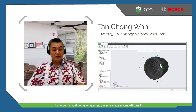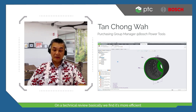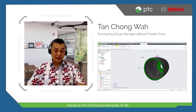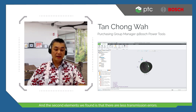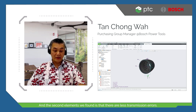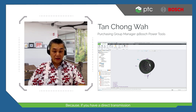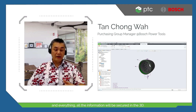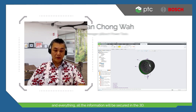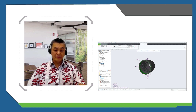On technical review, we found it is more efficient based on the functional elements of 3D. We also found there are fewer transmission errors because all the information is directly captured in the 3D model. As soon as the finished parts come back, they are assembled and measured at Bosch Power Tools.